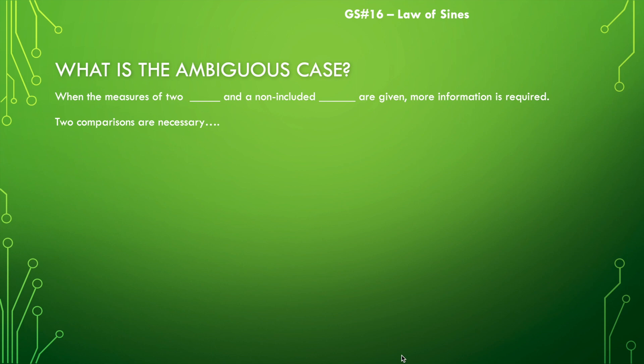So what the heck is the ambiguous case? If you know what the word ambiguous means, it means to be kind of unclear. And that's exactly what this is. If you are given the measures of two sides and a non-included angle, then in order to be able to solve this triangle, we need more information because we may have some things that aren't quite clear. We don't really know if it actually makes a triangle or does it make two triangles or is there just one. And what we need to do is make some additional comparisons and analyze this a little further.